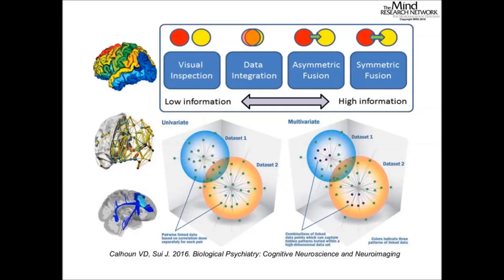Each brain imaging type reflects a limited aspect of the brain. Currently the most popular approach is to analyze different modalities separately and then compare them — the simplest being visual interaction, which is convenient though limited. Another approach is data integration: analyzing each modality separately and overlaying them, but this does not allow interactions between modalities.